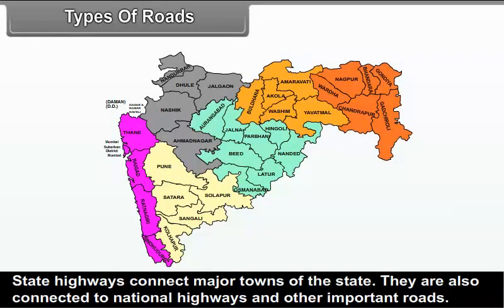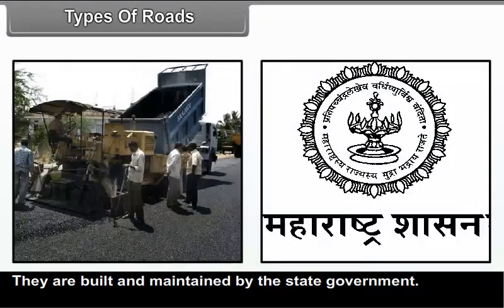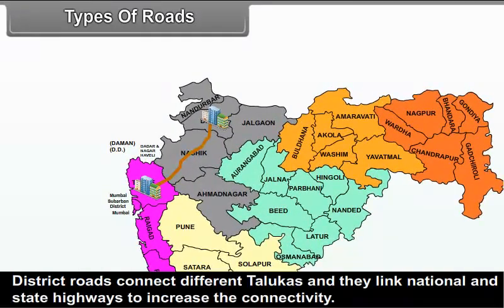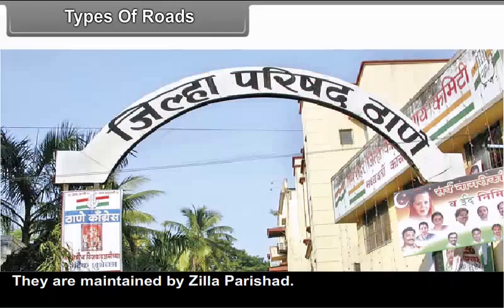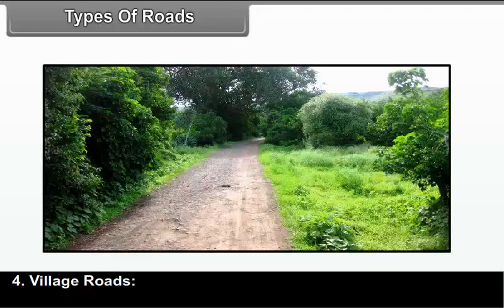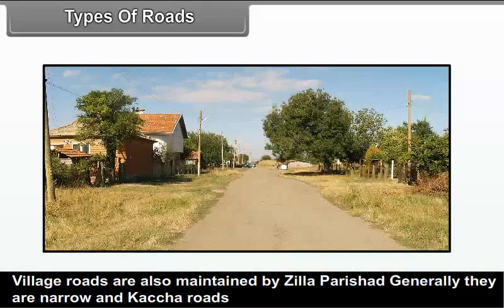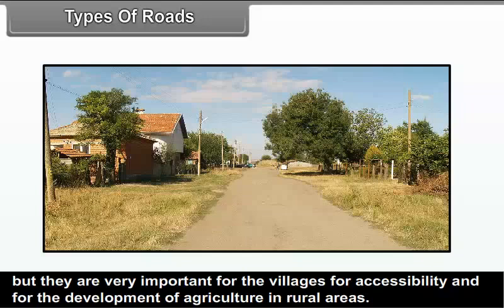State highways connect major towns of the state and are also connected to national highways and other important roads. They are built and maintained by the state government. District roads connect different talukas and link national and state highways to increase connectivity. They are maintained by the Zilla Parishad. Village roads are also maintained by the Zilla Parishad; generally they are narrow and katcha roads, but very important for accessibility and development of agriculture in rural areas.